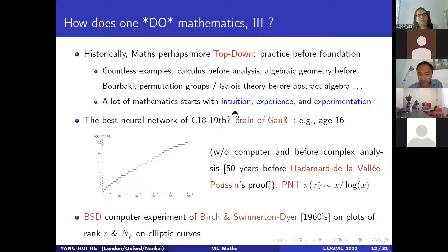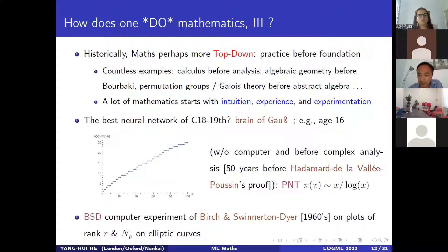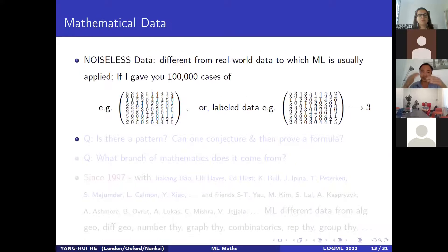The best neural network of the 18th–19th century was the brain of Gauss. That neural network is unparalleled: Gauss could look at prime counting data and say 'this is clearly x / log x' before the age of 16, before complex analysis was invented — 50 years before complex analysis was mature enough to allow a formal proof. It was purely based on pattern recognition. Even more recently, the Birch and Swinnerton-Dyer conjecture was raised because Birch and Swinnerton-Dyer plotted large numbers of ranks, rational points, and conductors on elliptic curves until they spotted a pattern.